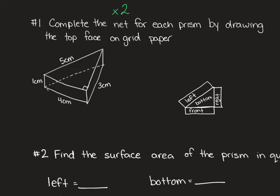So which face are we missing? We are missing the top face, which we could think of as this top triangle right here. Now, our top face needs to have one side that is five centimeters, one side that is three, and one side that is four.